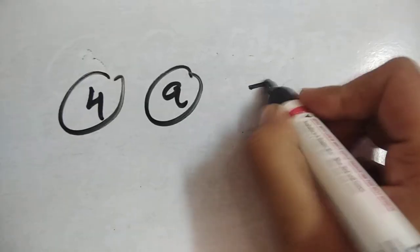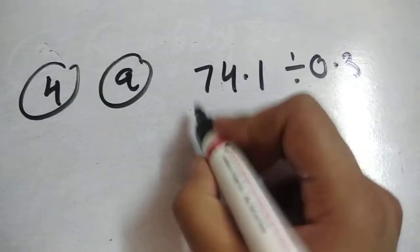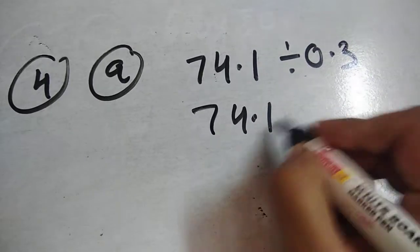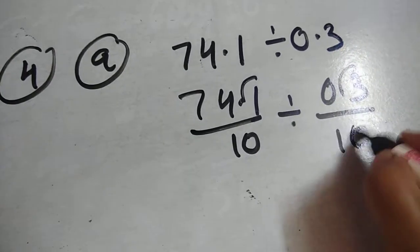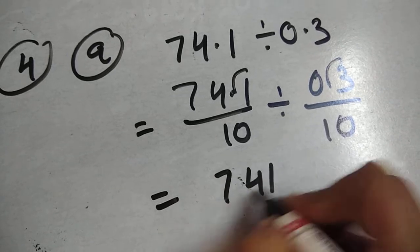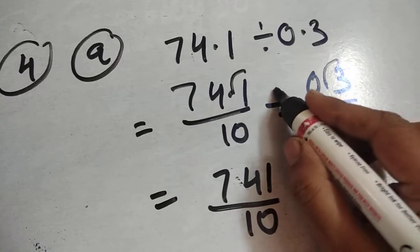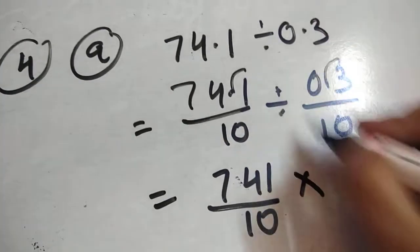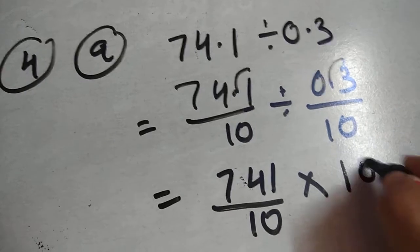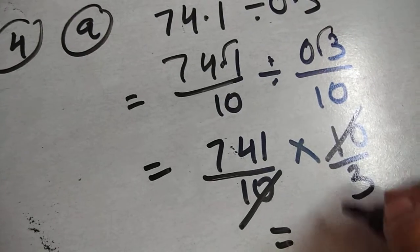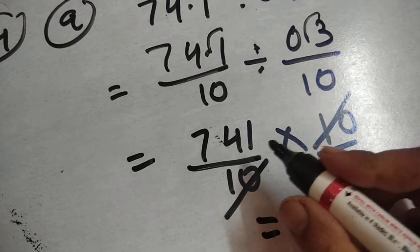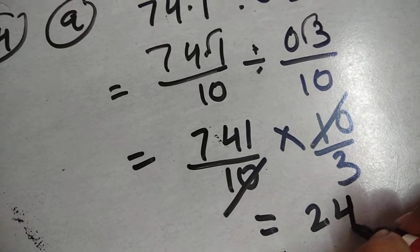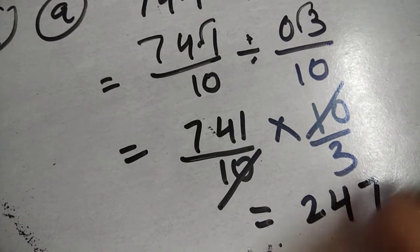In question number 4a, 74.1 is divided by 0.3. We can rewrite this — removing the decimal point — and dividing by 0.3 we take its reciprocal, which is 10 upon 3. Then we divide: 3 twos are 6, remainder 1; bring down to get 14, 3 fours are 12, remainder 2; then 3 sevens are 21. This is your answer.